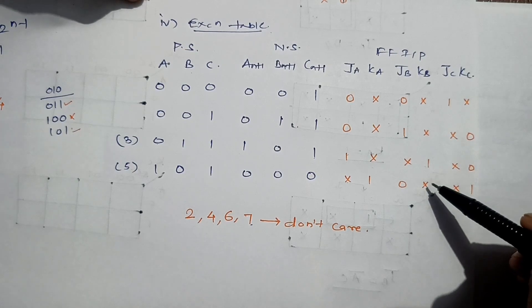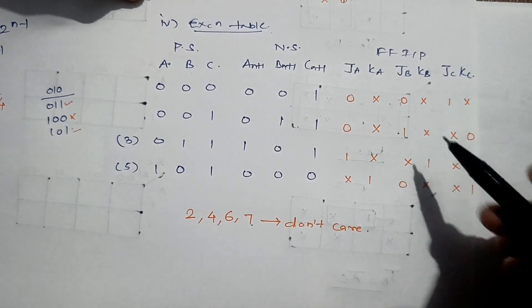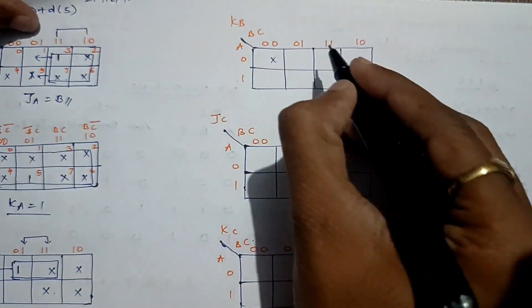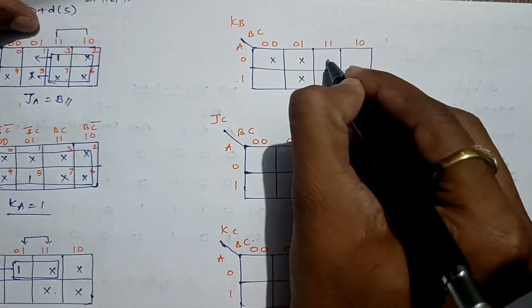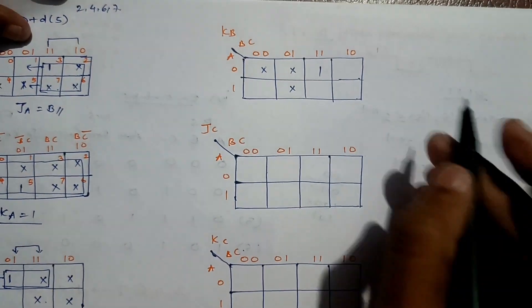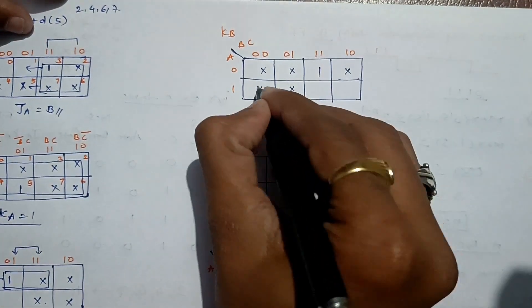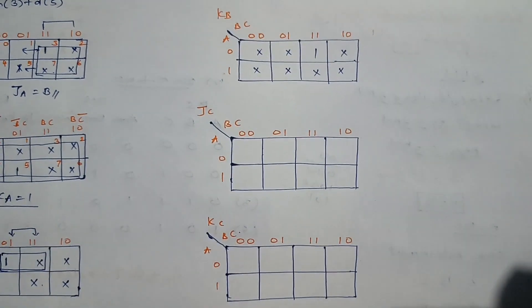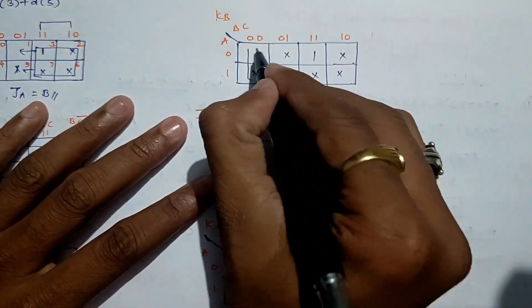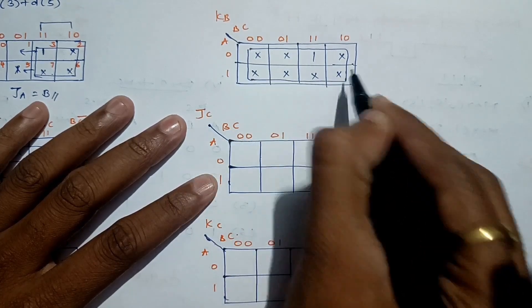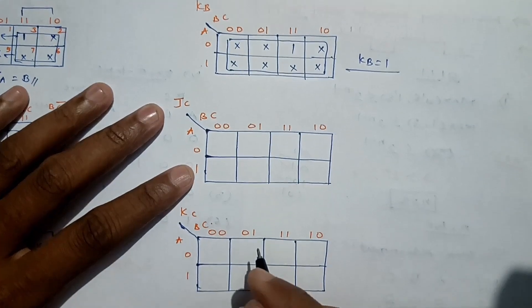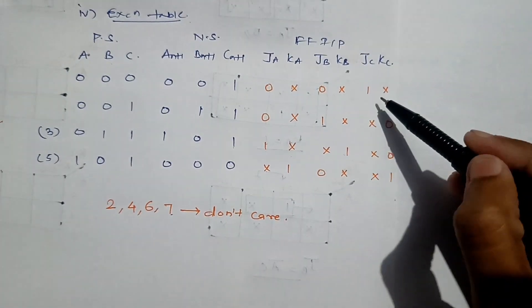For KB: states 0, 1, and 5 are don't care, state 3 gives 1, and states 2, 4, 6, 7 are don't care. Again, all cells are either 1 or don't care, forming an octet. Therefore KB = 1.